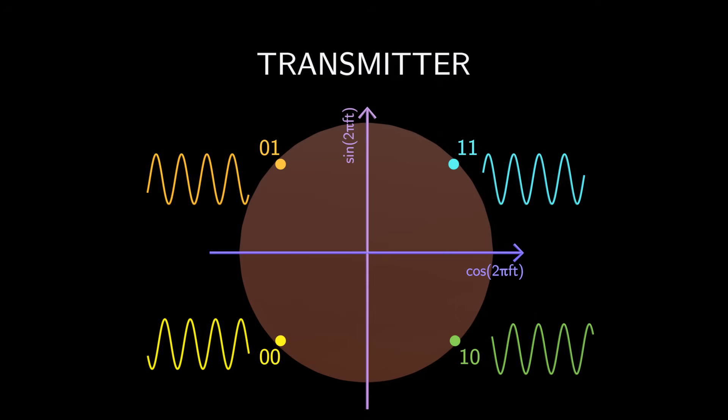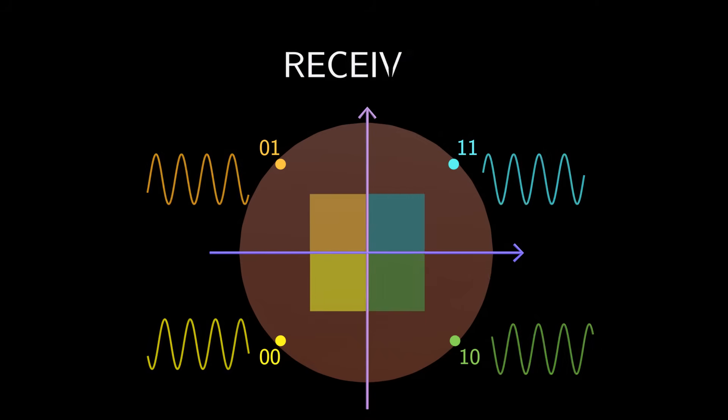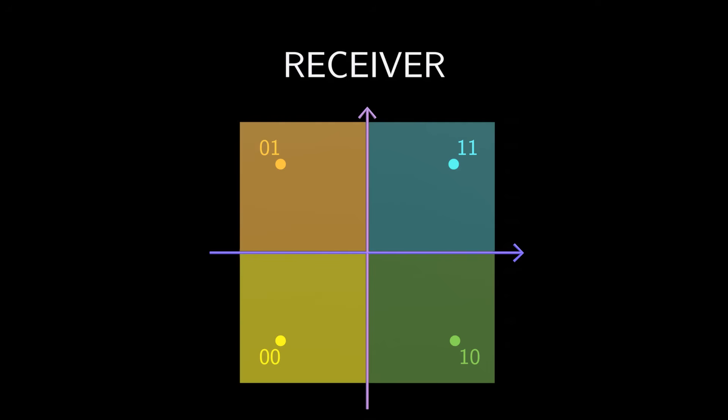In this example, the transmitter encodes two bits into a single carrier wave, and the receiver partitions the entire constellation space into four areas for decoding. For example, if the received signal lies in this area, then the receiver decodes it as bits 1-1.